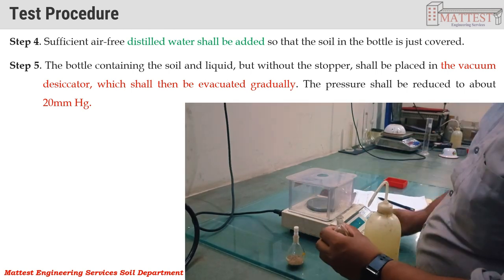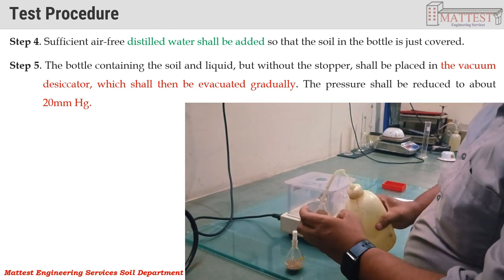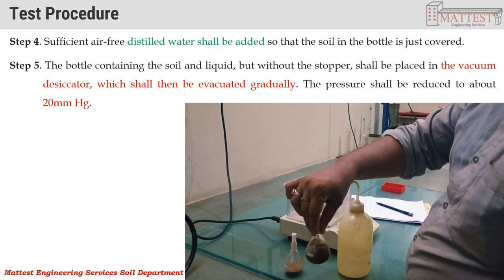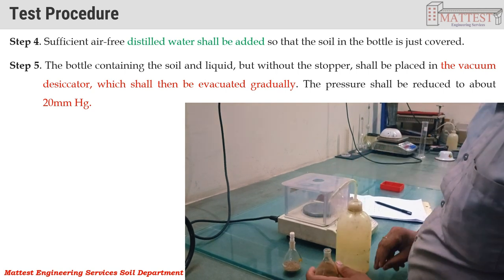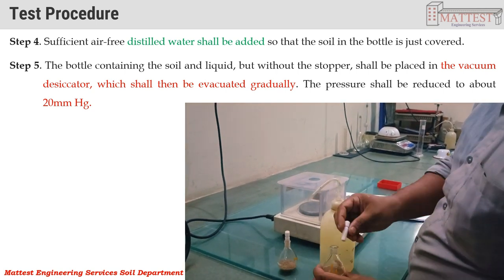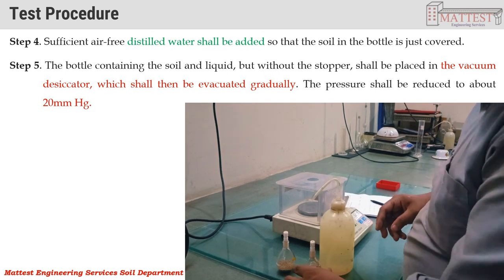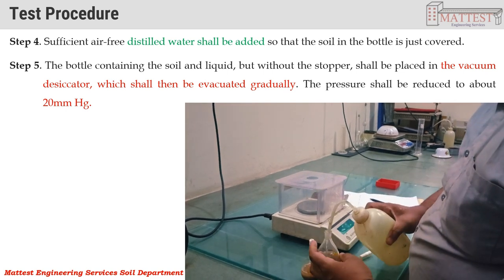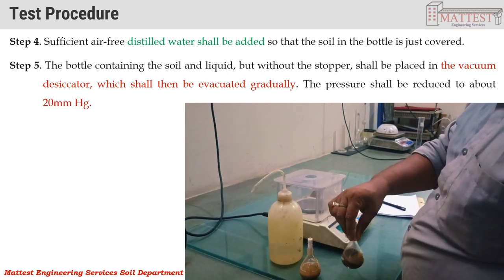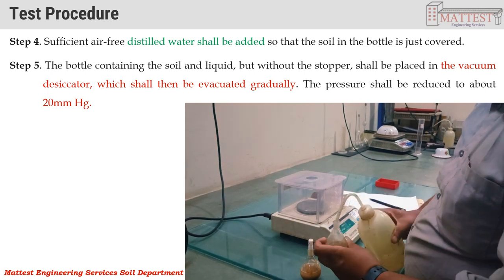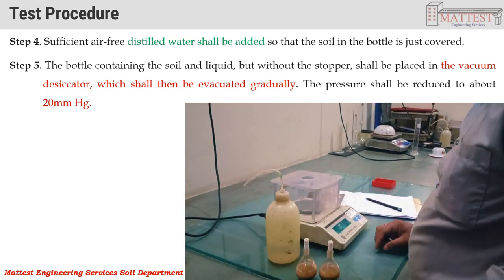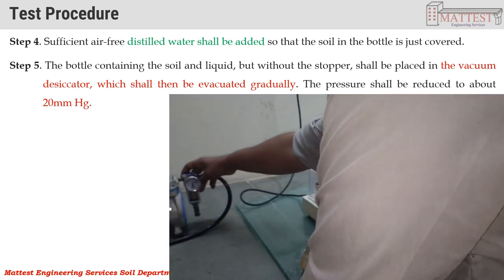Step 4: Sufficient air-free distilled water shall be added so that the soil in the bottle is just covered. Step 5: The bottle containing the soil and liquid but without the stopper shall be placed in a vacuum desiccator, which shall then be evacuated gradually. The pressure shall be reduced to about 20 mm Hg.